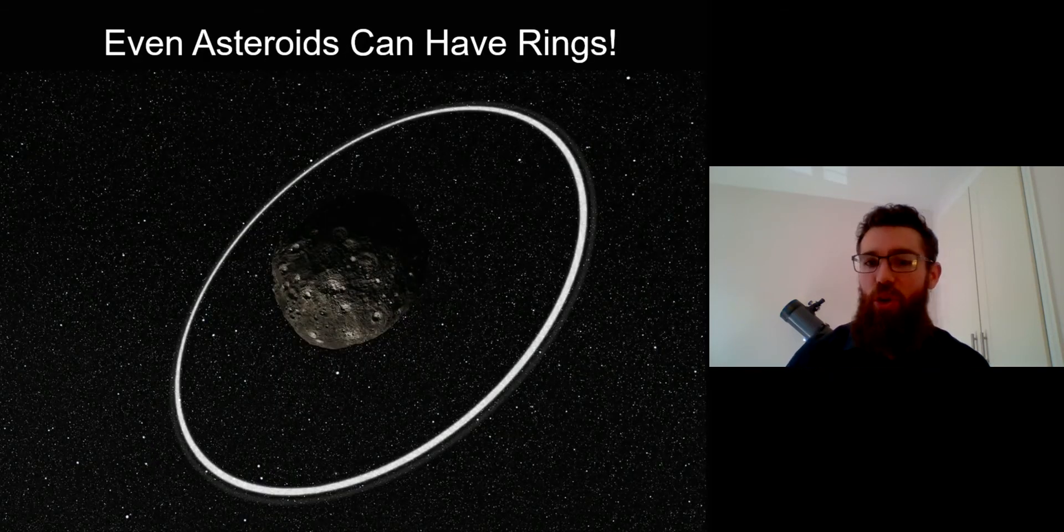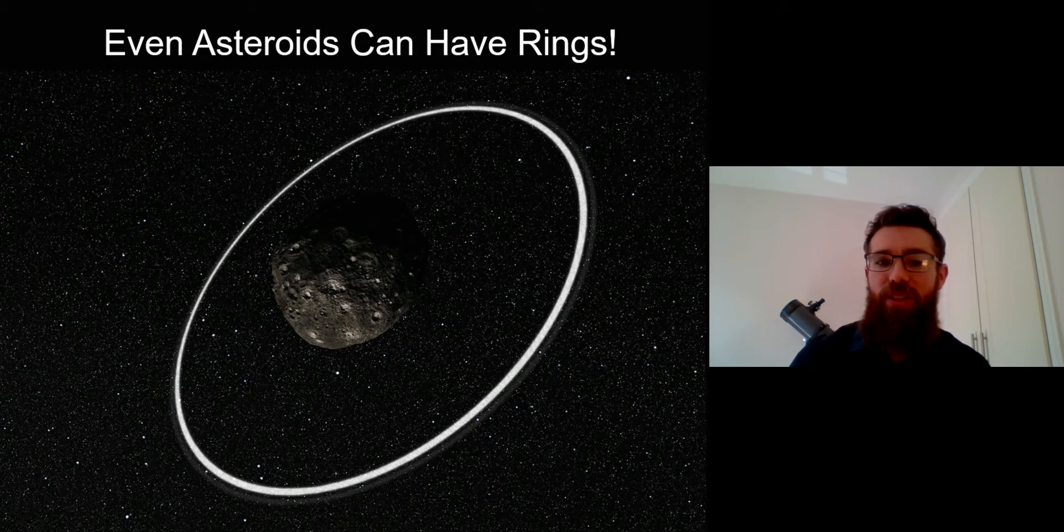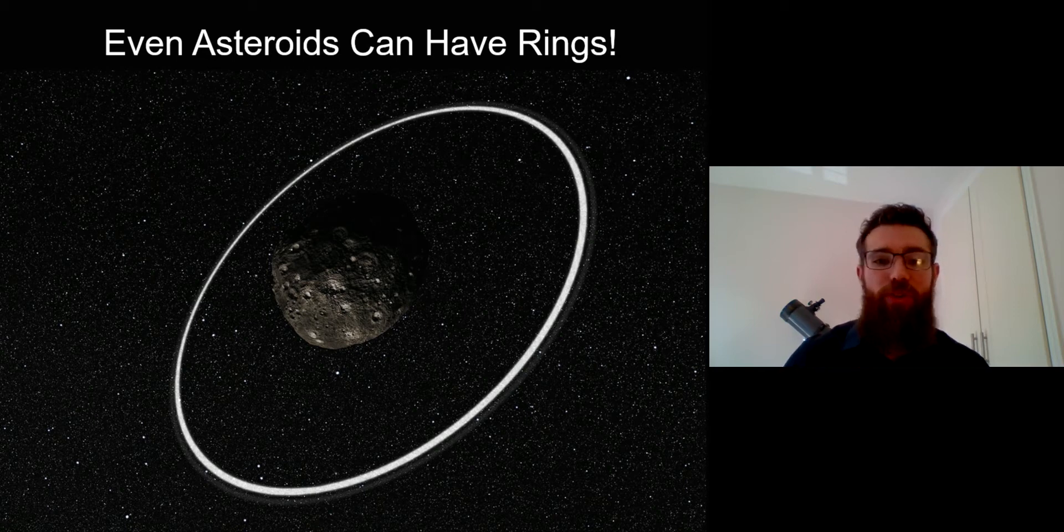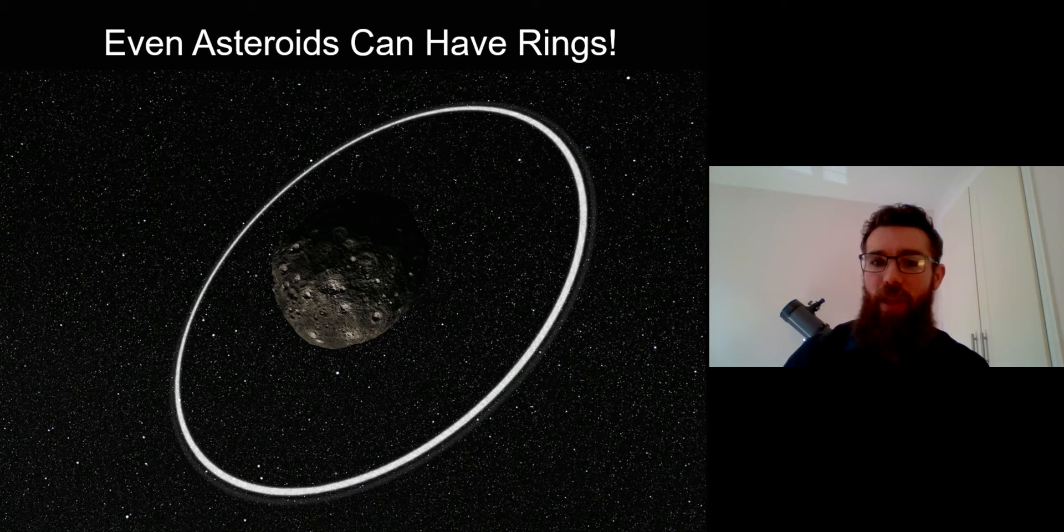Now interestingly, it's not just planets that can have these rings. There have been asteroids discovered that are thought to have these small ring systems around them towards the outer part of the solar system, which is quite an interesting idea. So it's not just confined to planets - smaller objects can potentially have planetary rings.